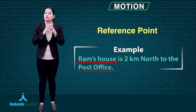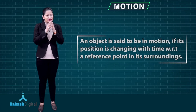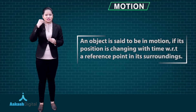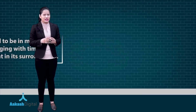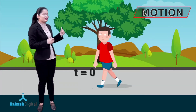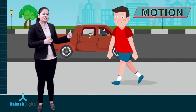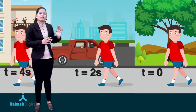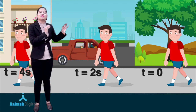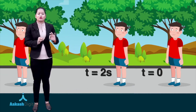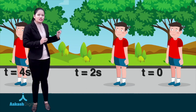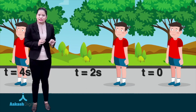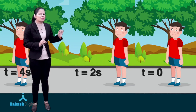An object is said to be in motion if its position changes with time with respect to a reference point in its surroundings. For example, if this person is standing near a tree, then near a car, then near a building — you can see that with the passage of time the position of the person has changed. This means the person is in motion. Now if the position of this person is not changing with the passage of time, then this person is said to be at rest.